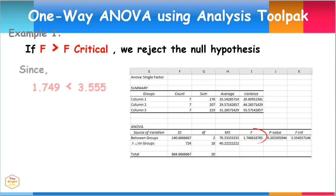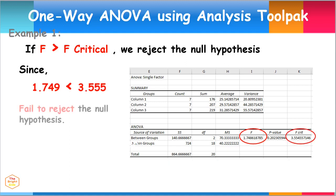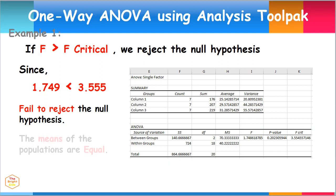Since 1.749 is less than 3.555, we therefore fail to reject the null hypothesis. The means of the populations are equal. The observed difference between the sample means is not convincing enough to say that the means of study hours of students differ. We can conclude that the means of the three populations do not differ significantly.